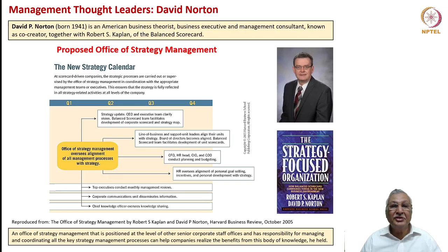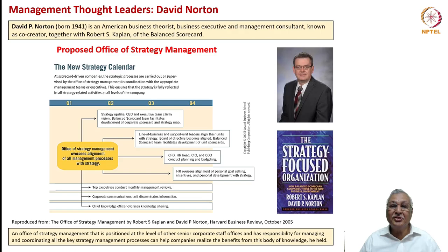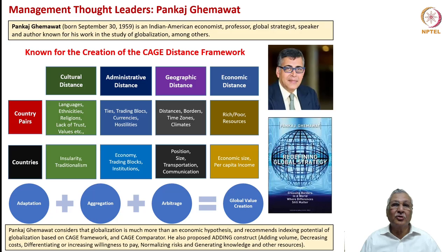David Norton is an American business theorist and management consultant who worked extensively with Robert Kaplan on the Balanced Scorecard. He proposed the model of the strategy-focused organization, saying that strategy should not be left to a few individuals and should not be seen as the singular responsibility of only the CEO or CXOs. He said every company should have an Office of Strategy Management so that strategy planning, development, and strategic management are institutionalized, with the same weightage as other CXO positions such as head of operations or head of marketing.